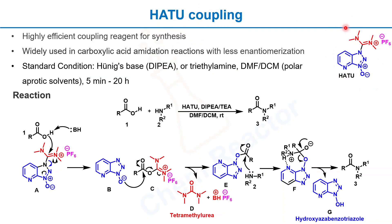This is the structure of the HATU coupling reagent. It has this azabenzotriazole ring, a guanidine functional group, and then to counter this positive ion it has a PF6 negative ion.